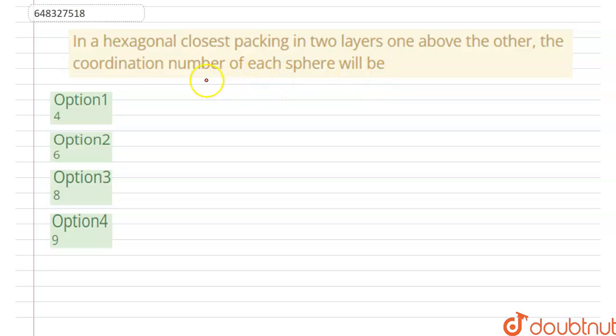So, hexagonal closest packing - we must know what is actually hexagonal closest packing. There are two layers, two types of layers.